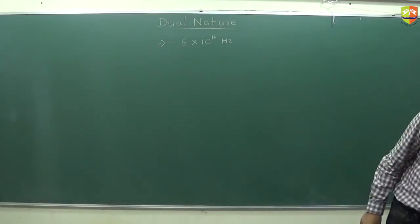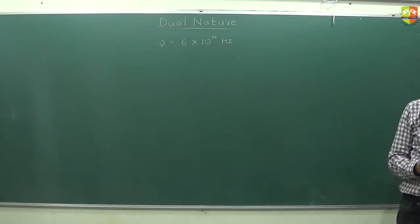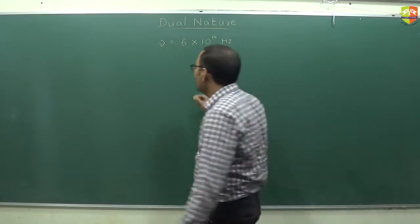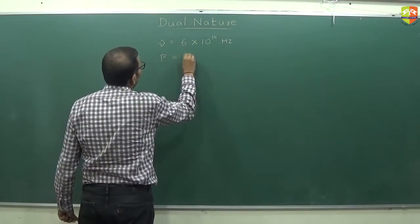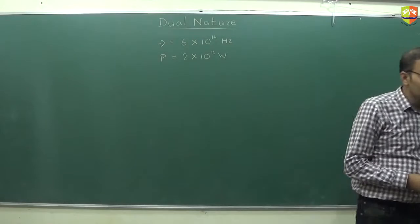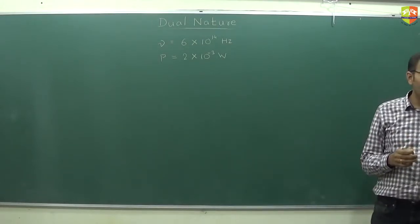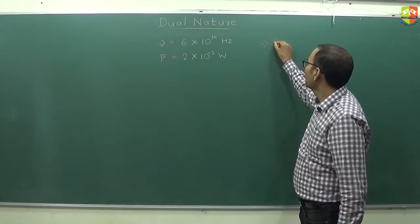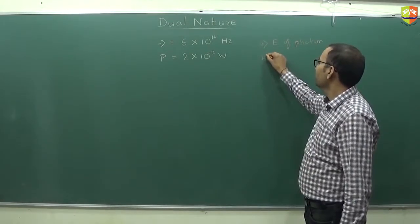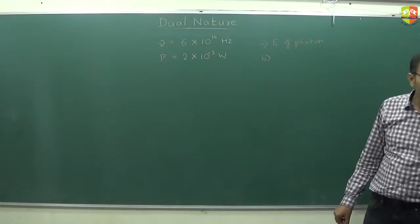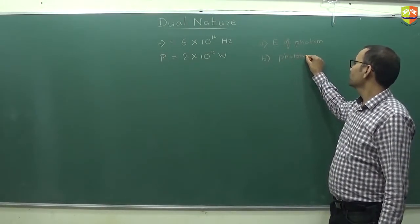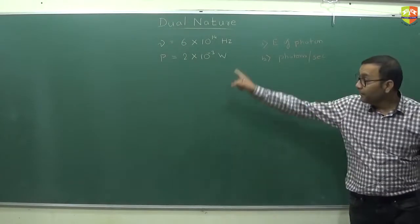Coming back to the numerical, the frequency is this. This frequency is produced by a laser. The power emitted by the laser is 2 into 10 raised to the power minus 3 watt. You need to find energy of the photon in the light beam. How much is the energy of the photon and how many photons per second are emitted? Photons per second that are emitted by this laser source.